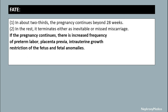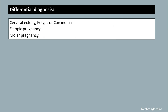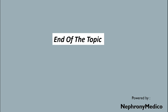Regarding fate, in about two-thirds of cases the pregnancy continues beyond 28 weeks. In the rest, it terminates either as inevitable or missed miscarriage. If the pregnancy continues, there is increased frequency of placenta previa, intrauterine growth restriction of the fetus, and fetal abnormalities. Differential diagnosis includes cervical ectopy, cervical carcinoma, ectopic pregnancy, and molar pregnancy.